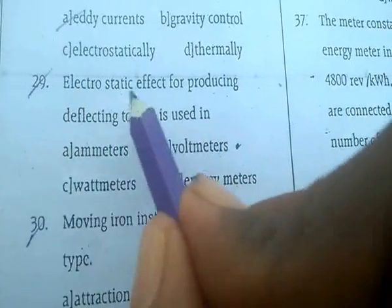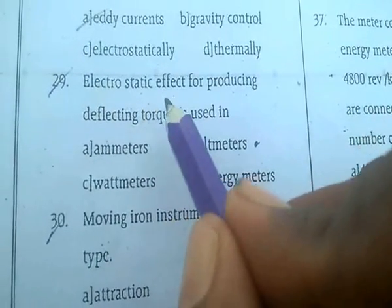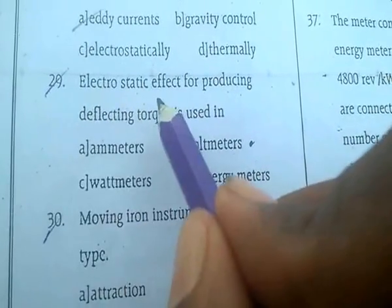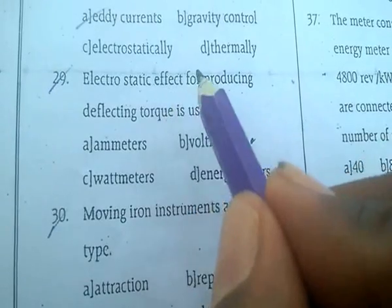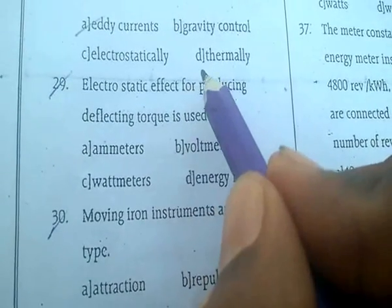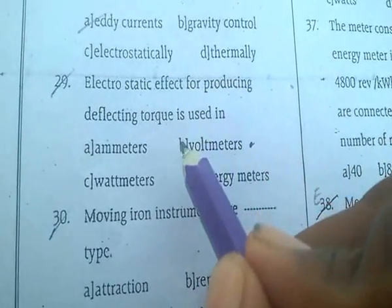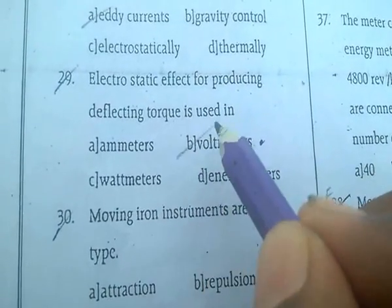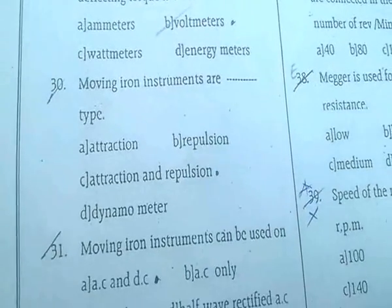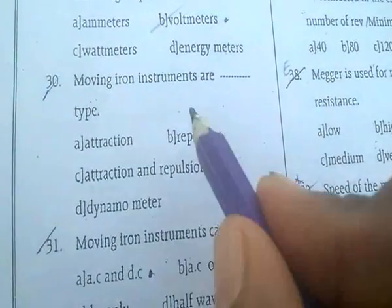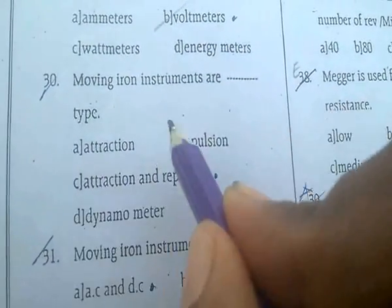Electrostatic effect for producing deflecting torque is used in electrostatic voltmeters. Electrostatic meters are mainly used to measure high voltages and are used as voltmeters.